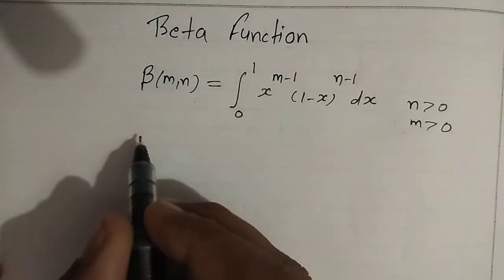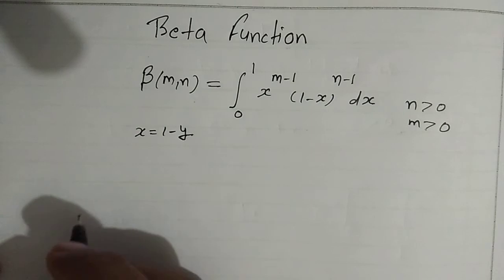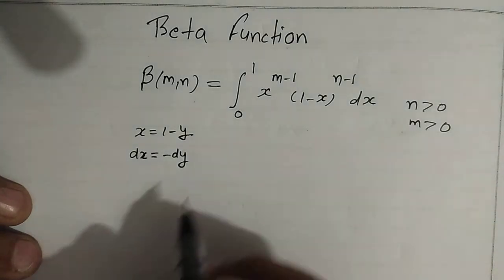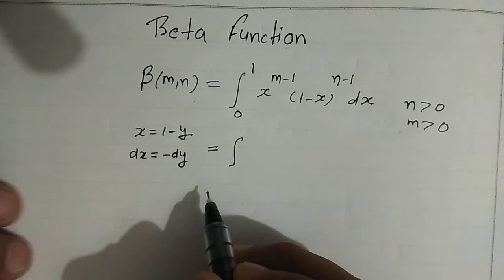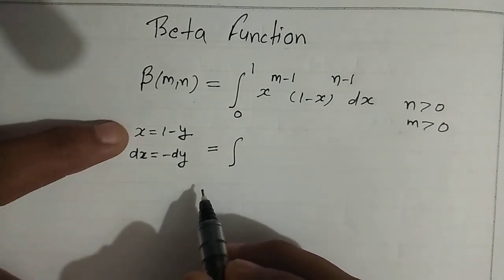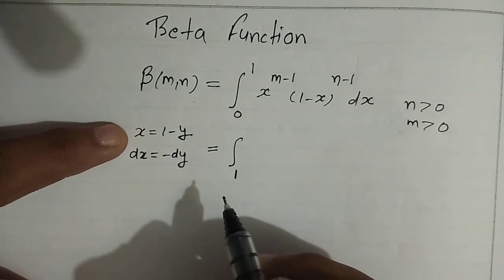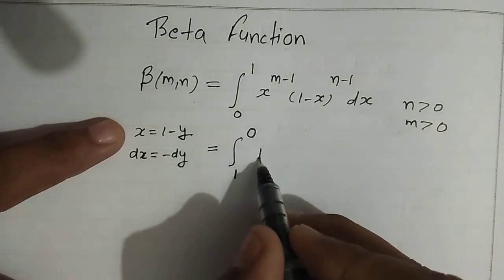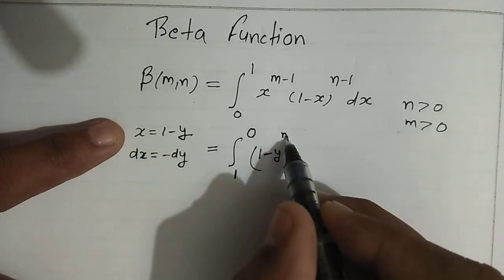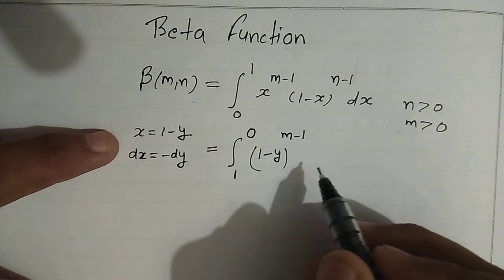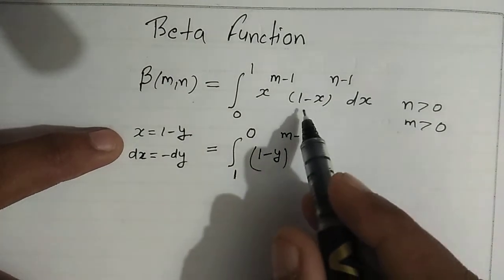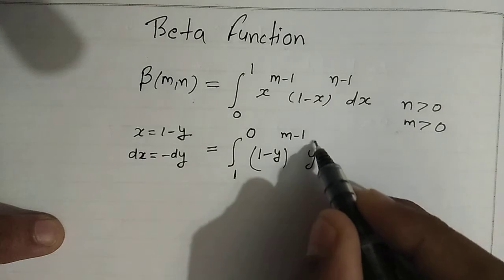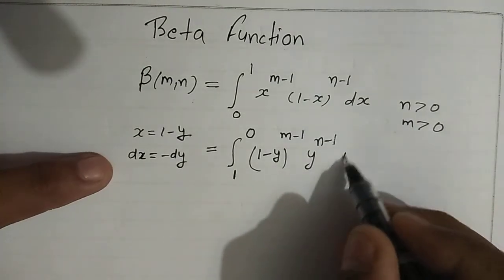Now let us substitute x equal to 1 minus y, so dx will be minus dy. The limits change as follows: when x equals 0, y equals 1, and when x equals 1, y equals 0. Substituting, we get 1 minus y to the power m minus 1, and since 1 minus x equals y, we get y to the power n minus 1, and dx equals minus dy.